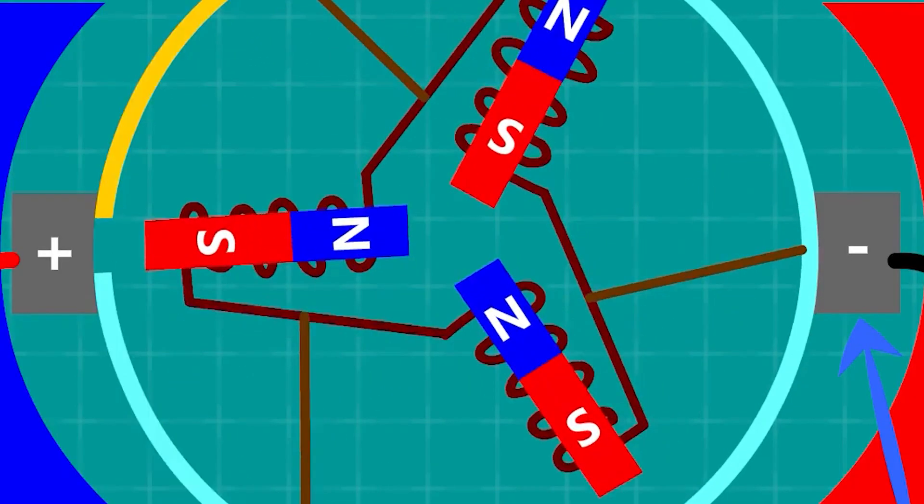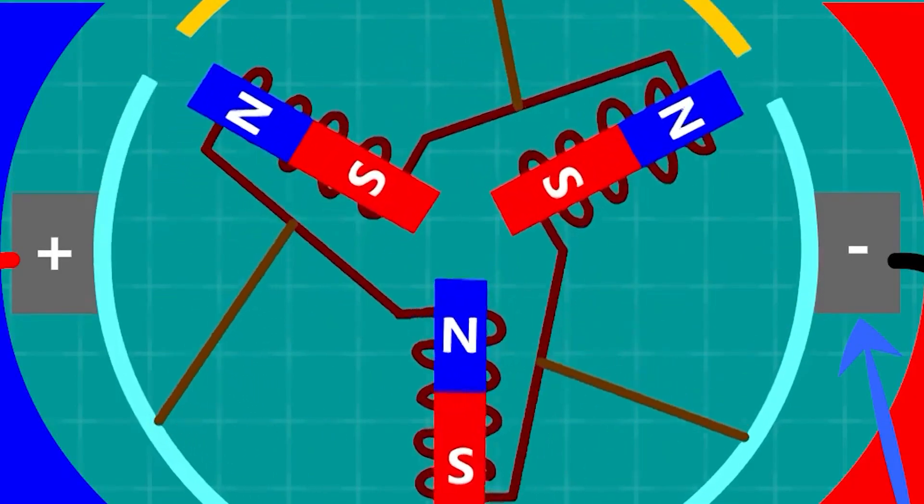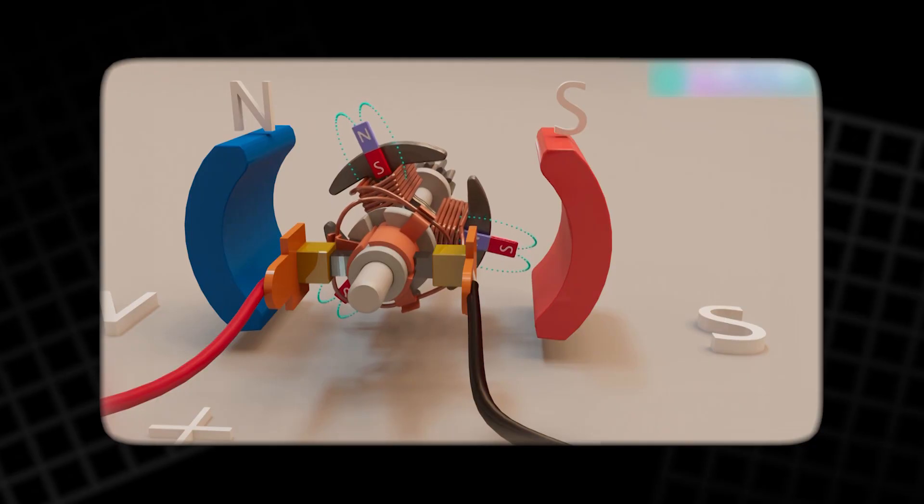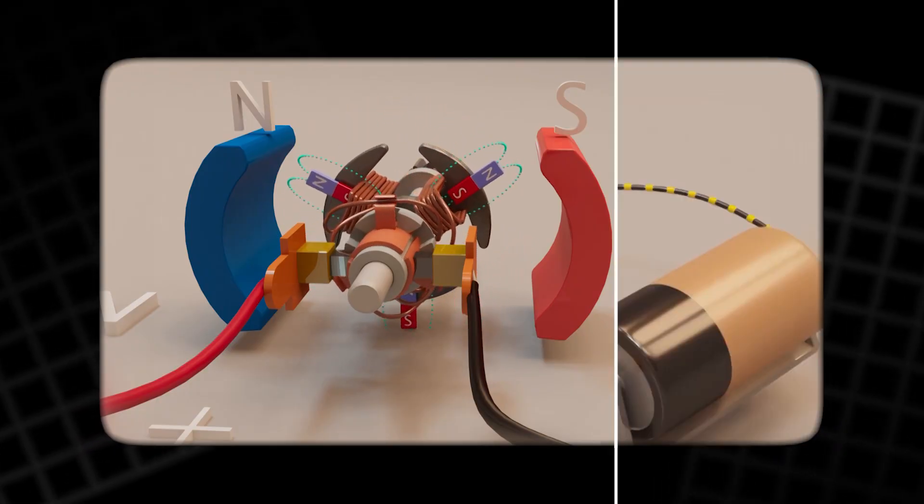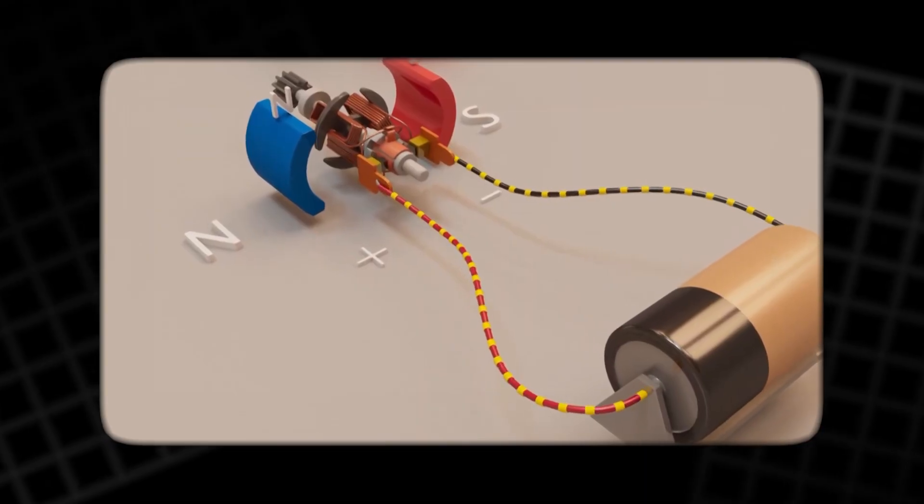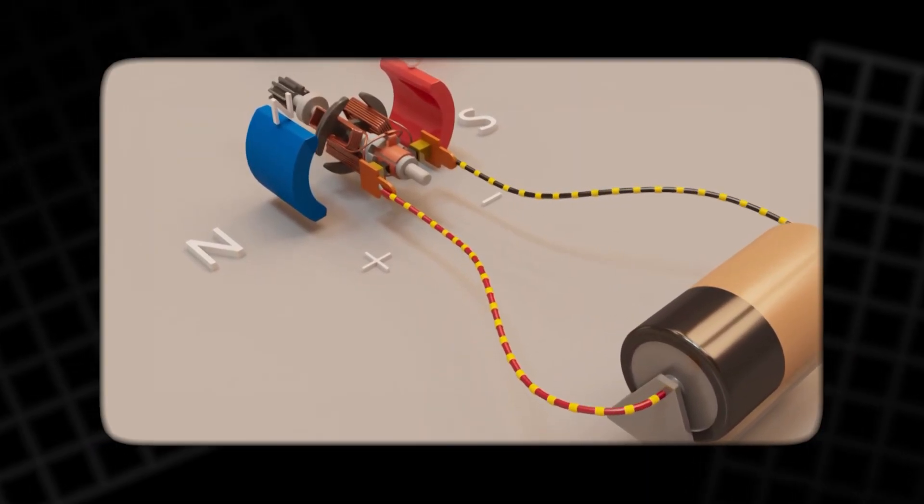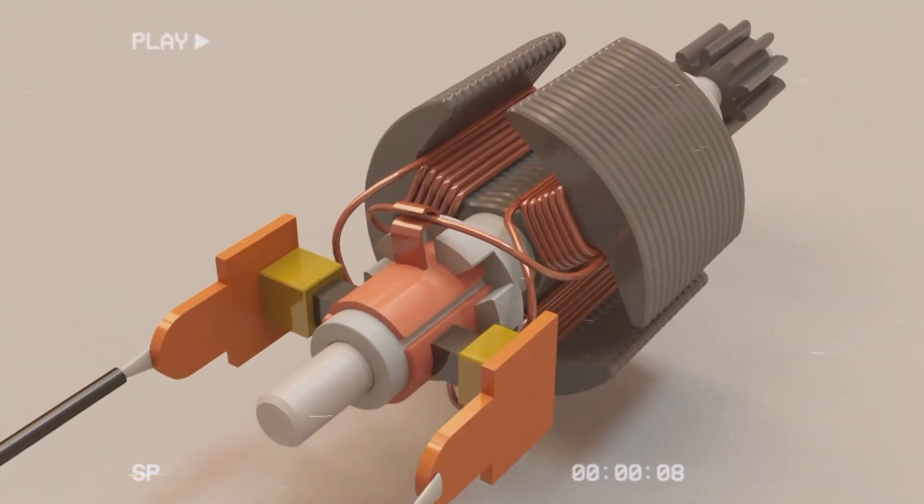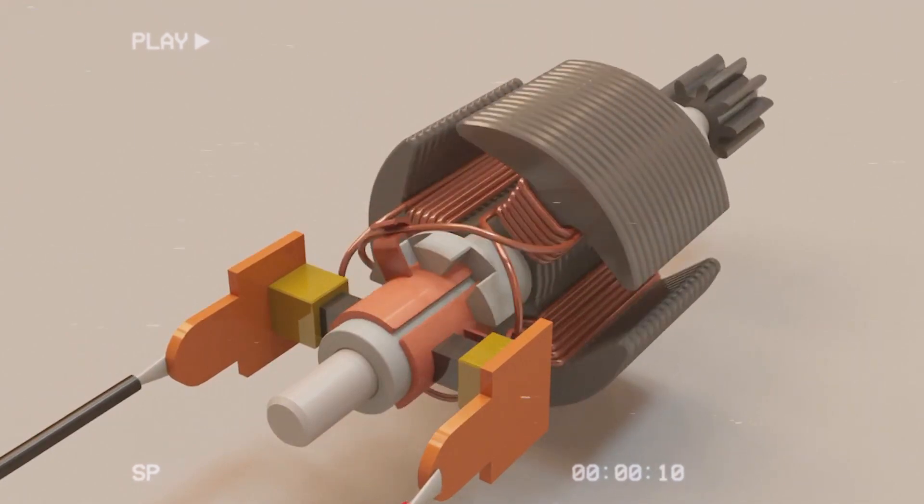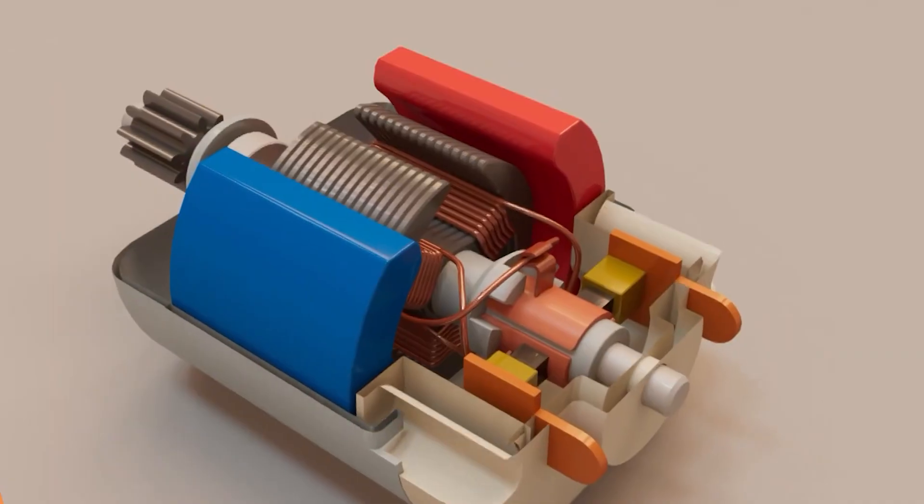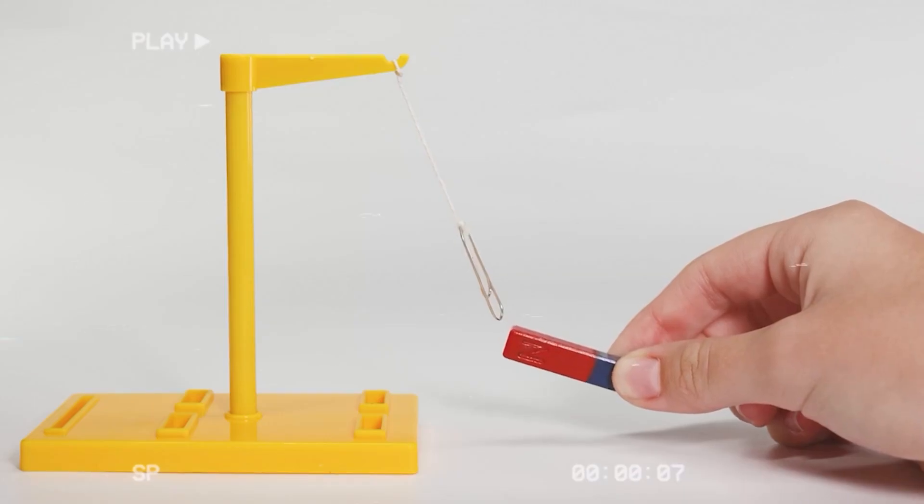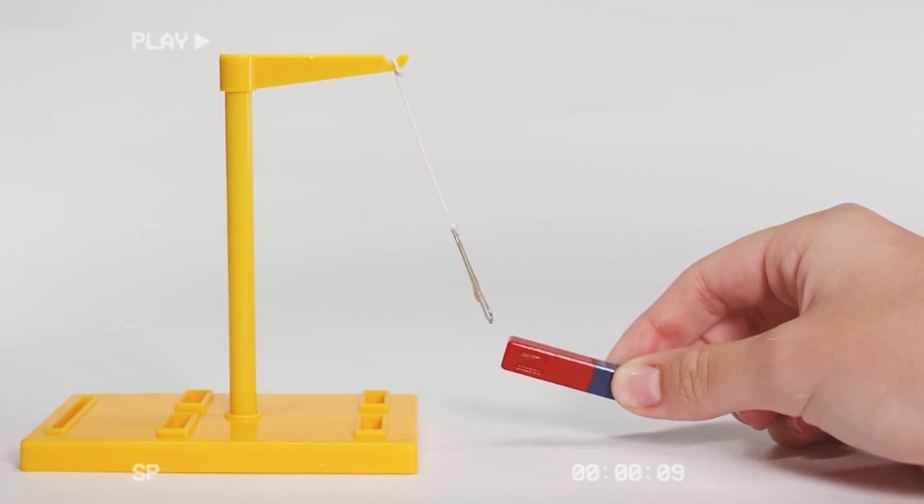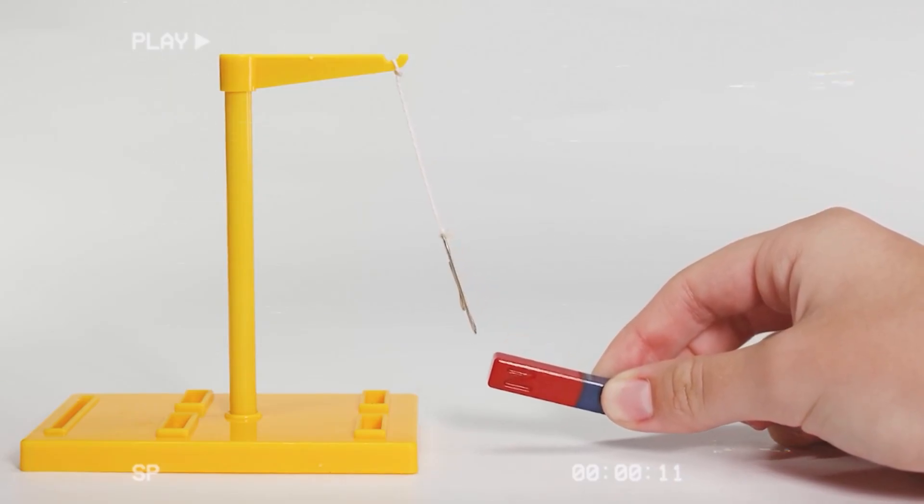Consider a simple steel bolt. On its own, it does not behave like a magnet. Its magnetic domains are disorganized, each pointing in random directions. Wrap insulated wire around it though, and connect the wire to a battery, and the story changes instantly. The current flowing through the coil forces the domains to align. The bolt transforms into a magnet with a distinct north and south pole. This new magnet can pick up paper clips or interact with other magnets exactly like a permanent one.